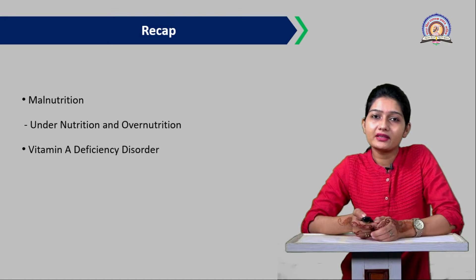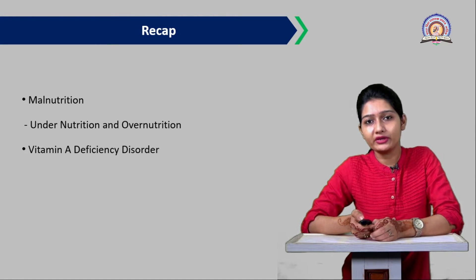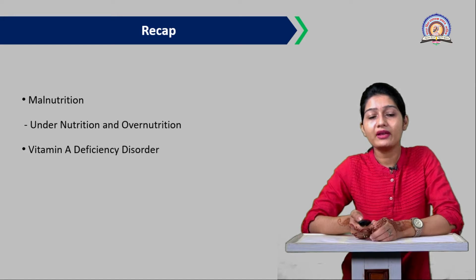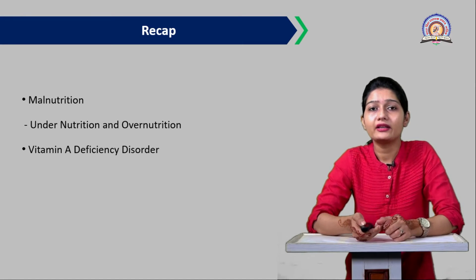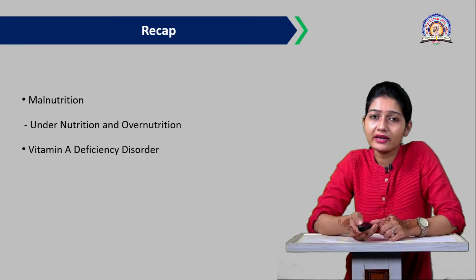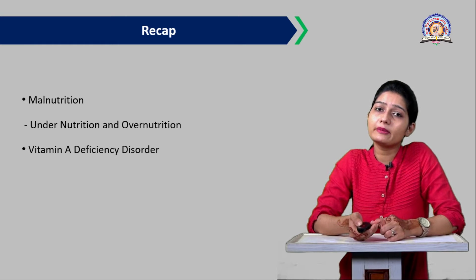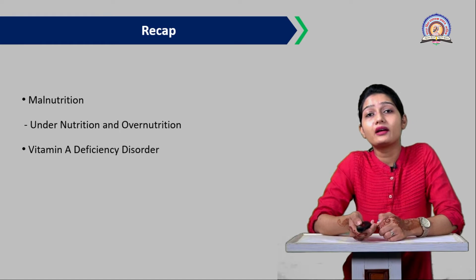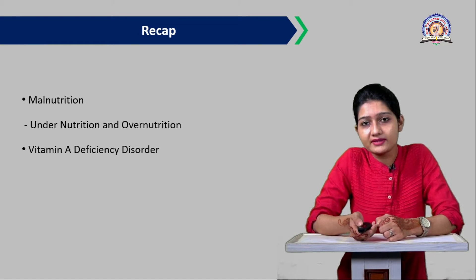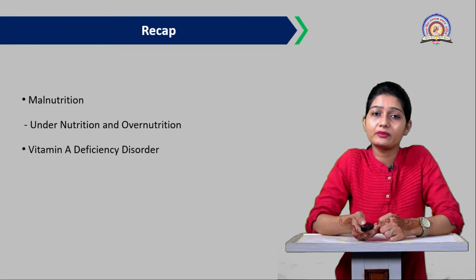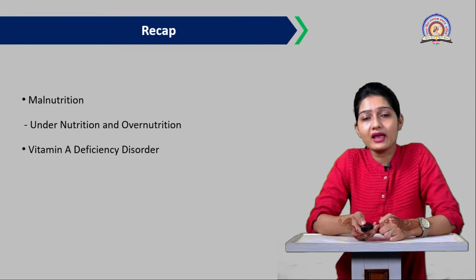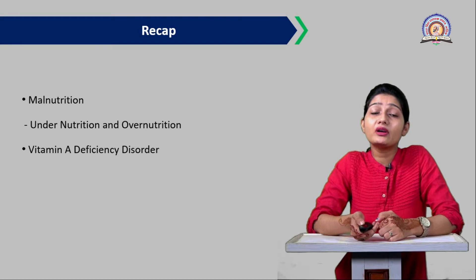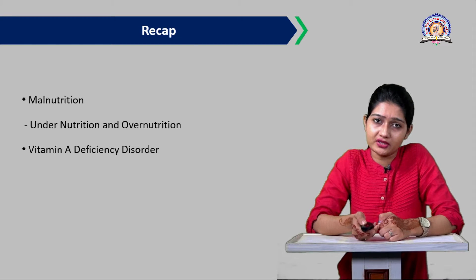In the previous lecture we studied malnutrition, including undernutrition, protein deficiency disorders such as kwashiorkor, and vitamin A deficiency disorders. But today we are going to see nutritional anemia, which is related to iron deficiency.